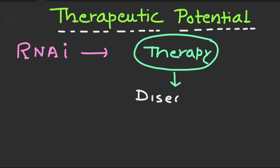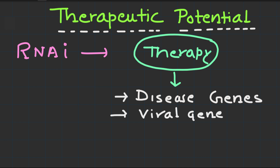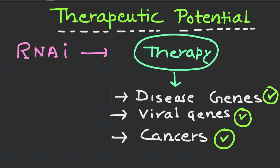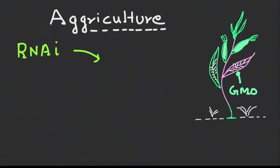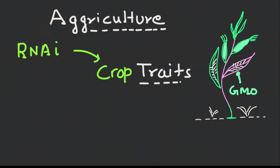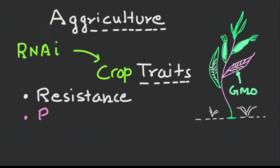RNA interference holds immense potential for developing novel therapeutics. It can be utilized to target disease-causing genes or viral genomes, providing a promising avenue for treating genetic disorders, viral infections, and even certain types of cancers.